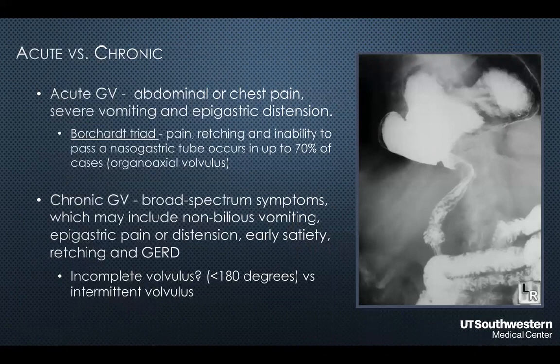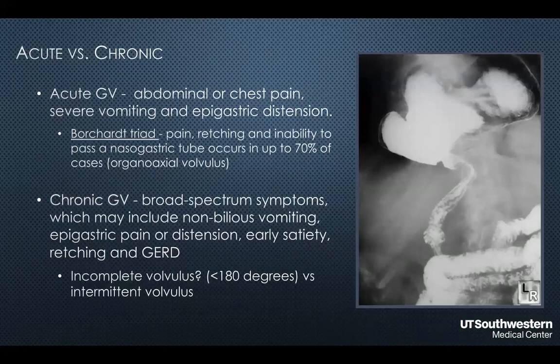Gastric volvulus can also be divided into acute and chronic. Patients with acute gastric volvulus have a sudden onset of abdominal or chest pain with severe vomiting and epigastric distension, and often present with Borchardt's triad — pain, retching, and the inability to pass a nasogastric tube — which most commonly indicates an organoaxial volvulus and a closed-loop obstruction. Patients can also have chronic gastric volvulus with a broad array of symptoms, either an incomplete volvulus of less than 180 degrees or recurrent intermittent complete volvulus.